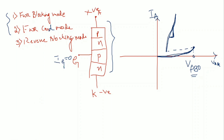Now let me change the value of IG. I will take IG equal to IG1, increasing the value of IG. If I increase the value of IG, the current will again take the same path but it reaches the forward breakover voltage at an earlier point. This is the first point without IG, and this is the second point with a certain amount of gate current. So as you increase the gate current, the breakover point gets reduced, and the rest of the characteristic — that is the linearity — remains the same.